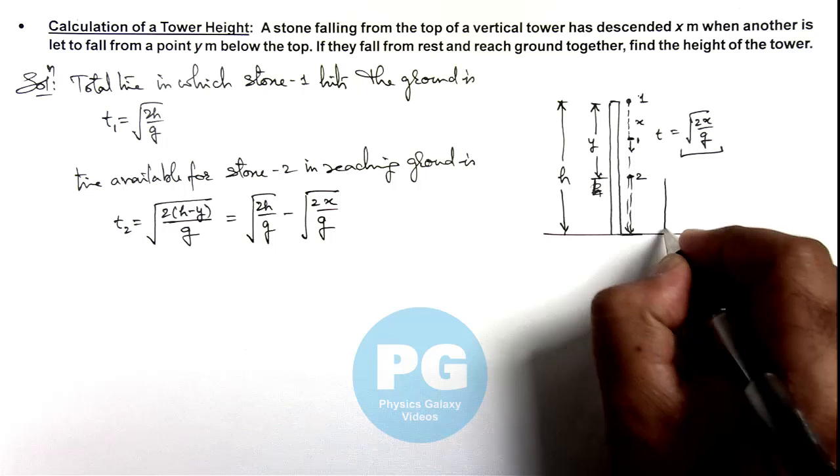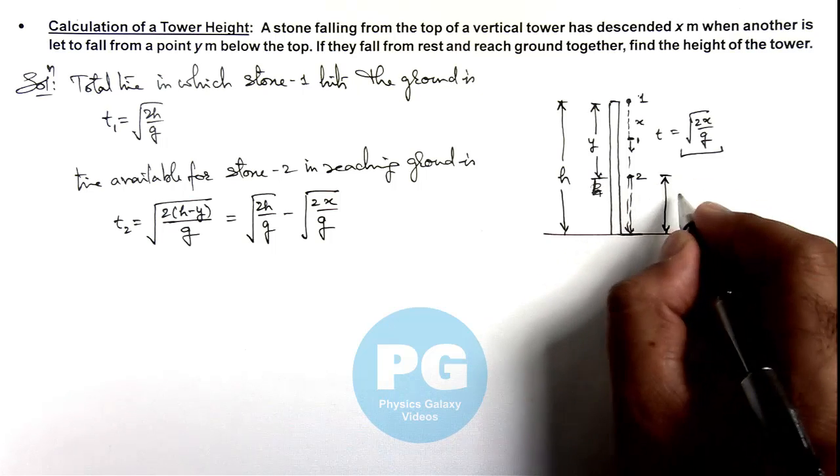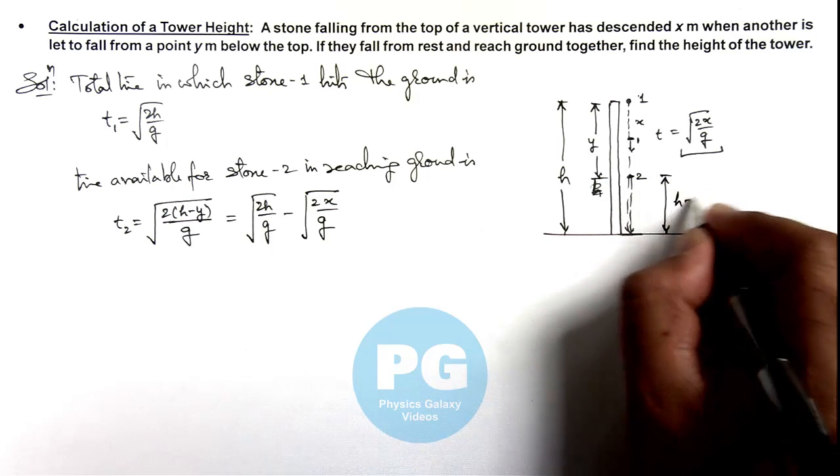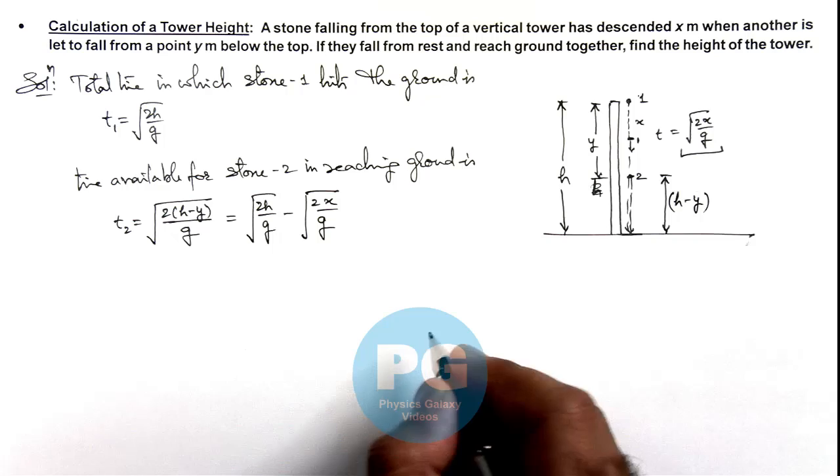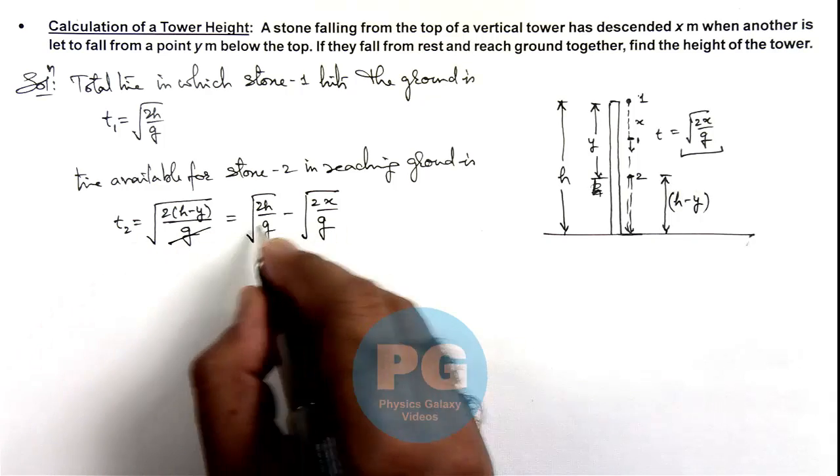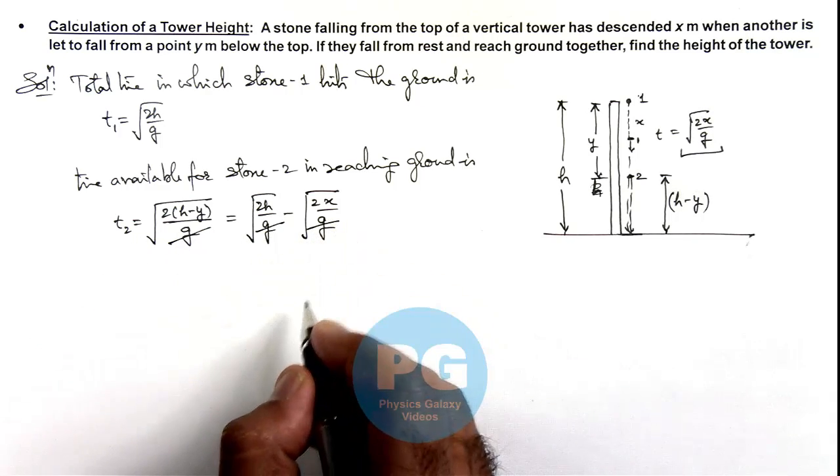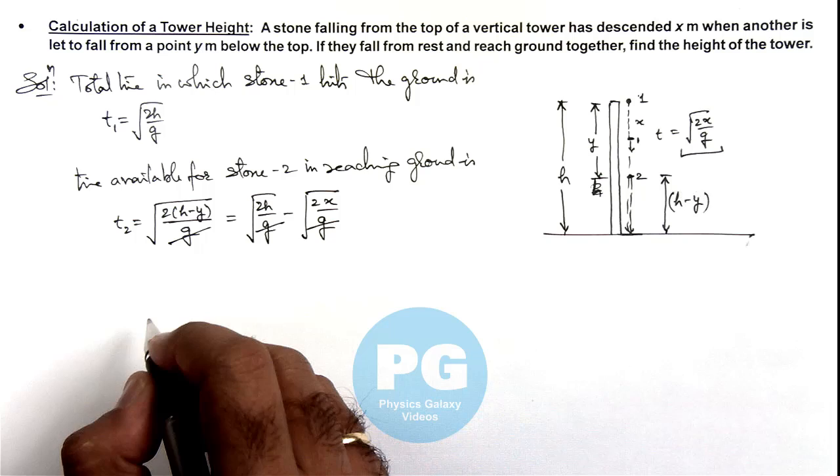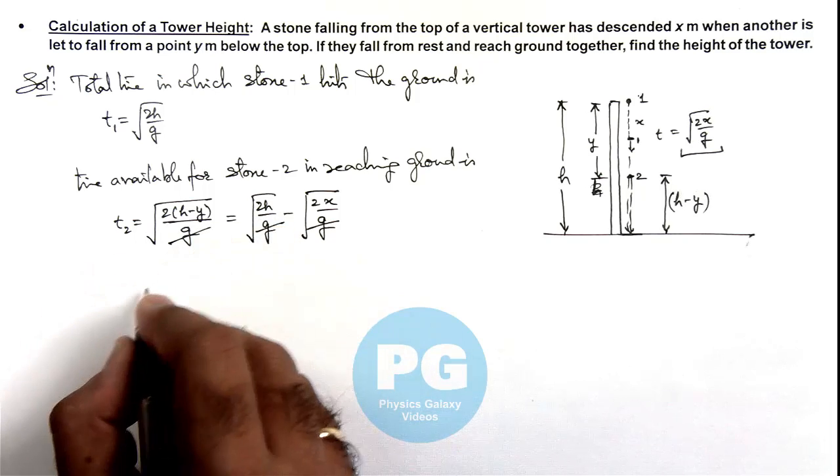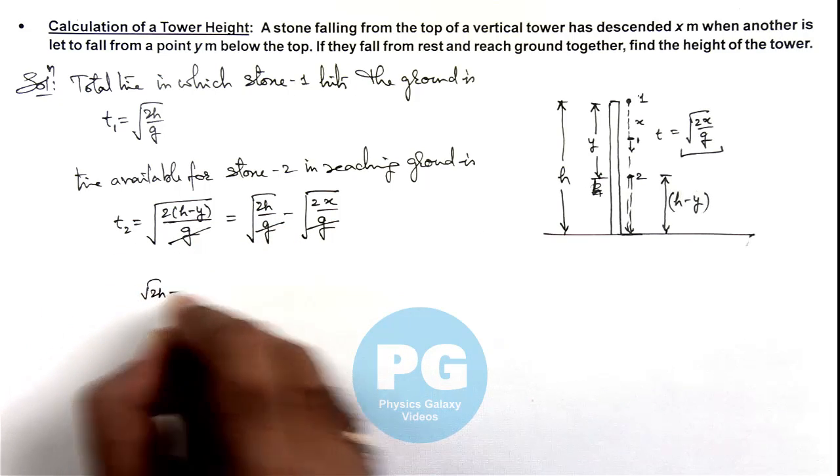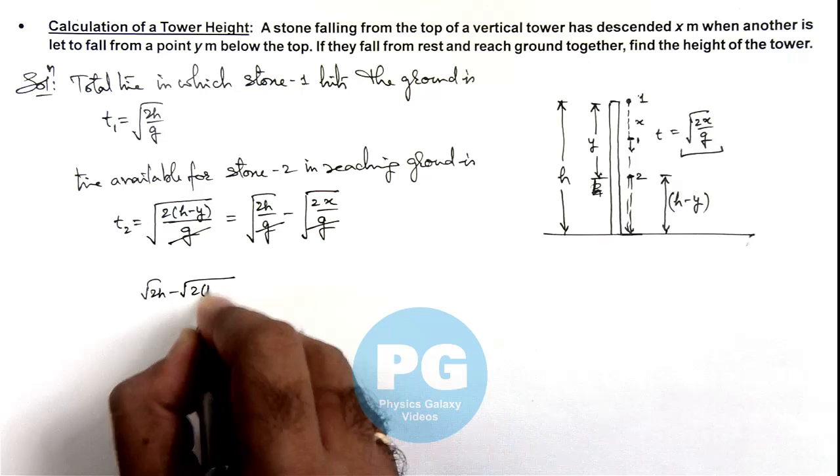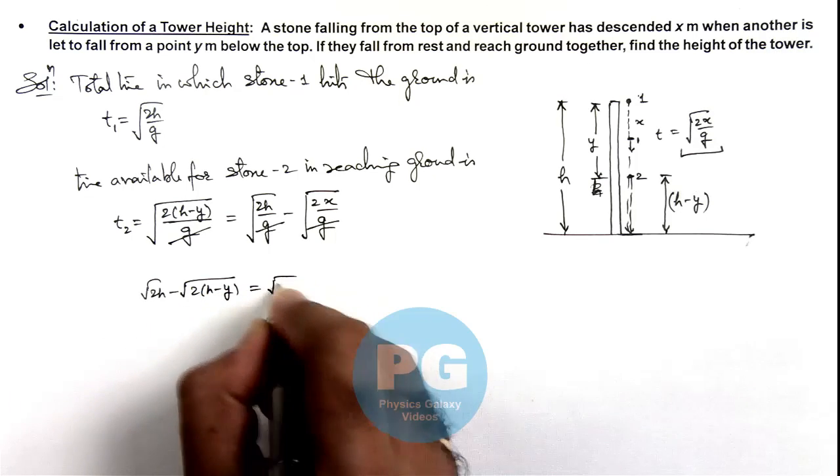And it has to fall in free fall from rest a height h minus y. Now if we simplify this, here g gets cancelled out, and on simplifying this expression, we can write it as 2h minus root of twice of h minus y is equal to root 2x.